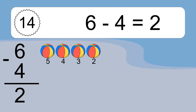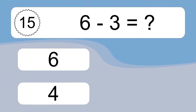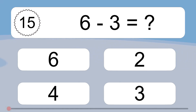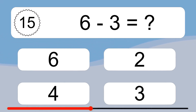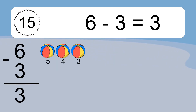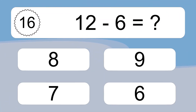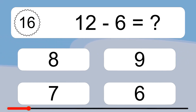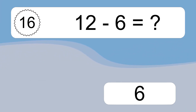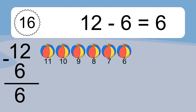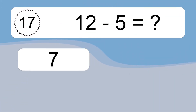6 minus 4 equals what? 6 minus 4 equals 2. Let's count it. 5, 4, 3, 2. 6 minus 3 equals what? 6 minus 3 equals 3. Let's count it. 5, 4, 3. 12 minus 6 equals what? 12 minus 6 equals 6. Let's count it. 11, 10, 9, 8, 7, 6.